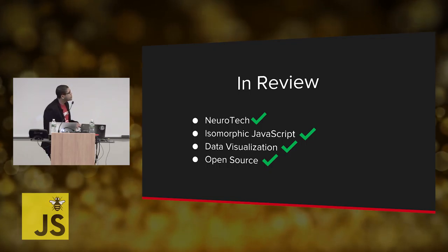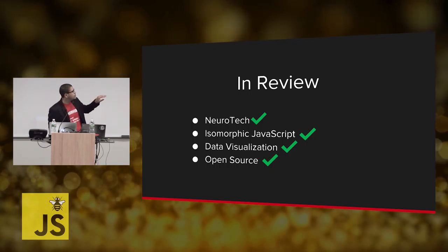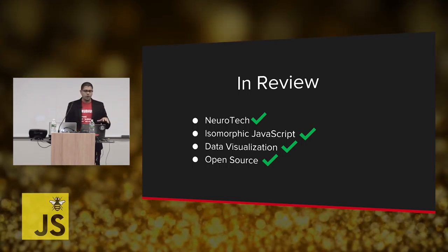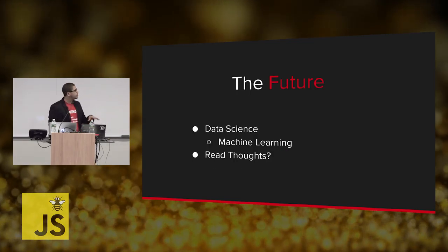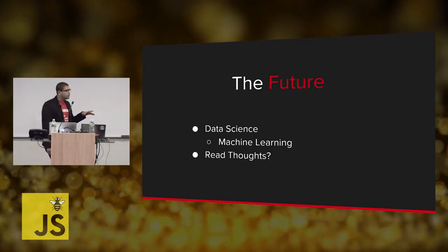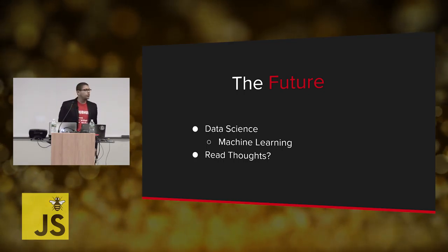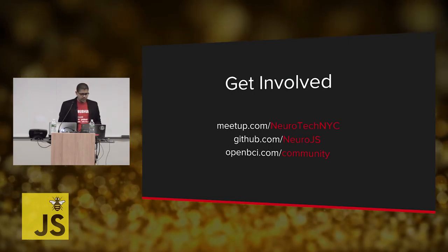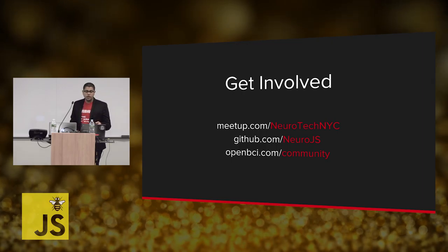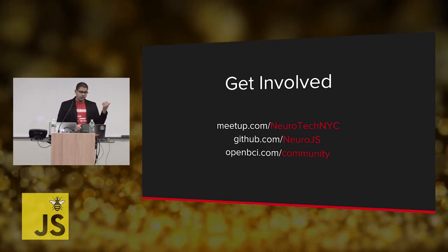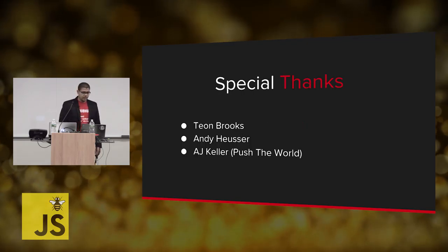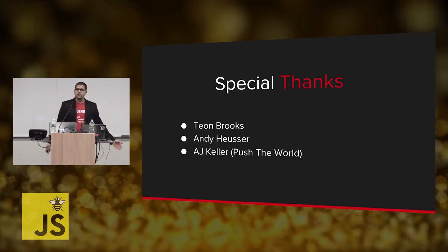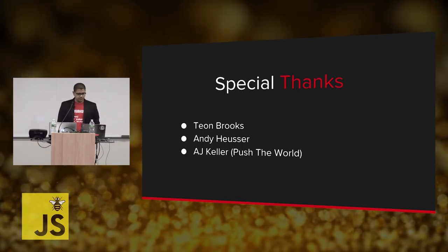In review: we talked about neurotech, isomorphic JavaScript, data visualization, and open source at a very high level — because these are all topics that really deserve their own talk. For the future, we want to really get into data science, make sure we understand what we're getting, and eventually maybe read thoughts. You can get involved by going to meetup.com neurotech NYC, going to the repo, and also going to the OpenBCI community. A special thanks to the team that has been working with me on all this awesome stuff.